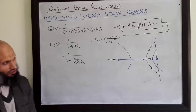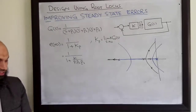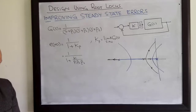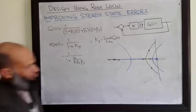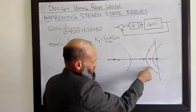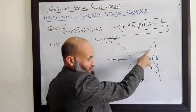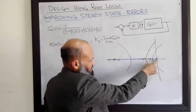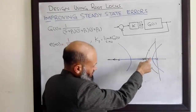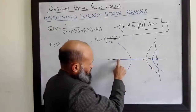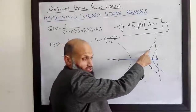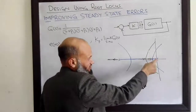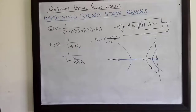Although the steady state error has been decreased because the type of the system is increased, the transient characteristics are also disturbed. We do not want to disturb the transient characteristics while also wanting to improve steady state error. The root locus no longer passes through the desired poles because the angle condition is not satisfied — there is now an additional angle contribution from the new pole. The angle contribution from the original poles was already satisfied for the desired point, but the additional pole breaks that condition.